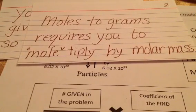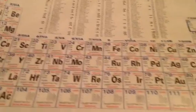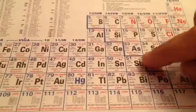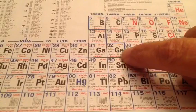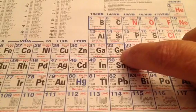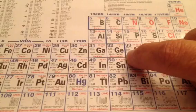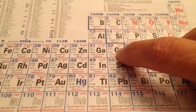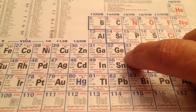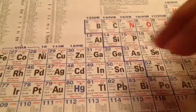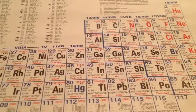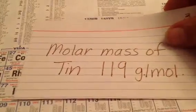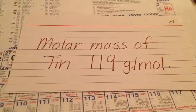I've got to go look up the molar mass of the element tin, because it was just tin all by itself. The molar mass of tin is 118.710, which I'll round to 119. So the molar mass of tin is 119 grams per mole.